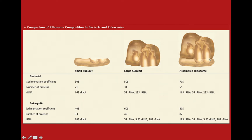Ribosomes are made up of a small subunit and a large subunit, and they assemble together to form the protein translation machinery — the machine that synthesizes proteins inside the cell. In bacteria and eukaryotes there are differences between these subunits. For example, the small subunit contains a 16S ribosomal RNA in bacteria, and in eukaryotes it's 18S. The number of proteins is also increased in eukaryotes.